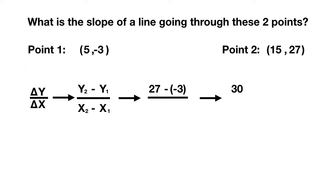So in this problem, the x2 is 15, and we can subtract the x1, which is 5. 15 minus 5 gives us 10, and 30 divided by 10 gives us a slope which equals 3.